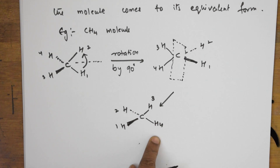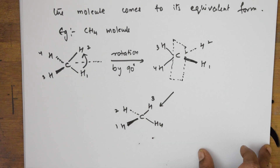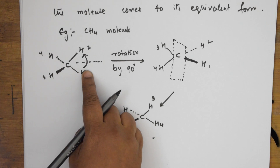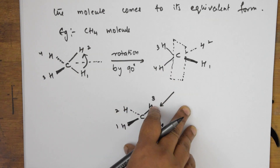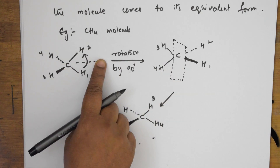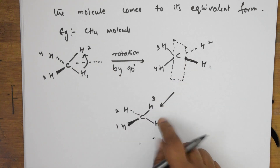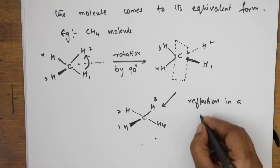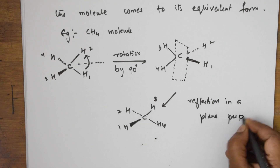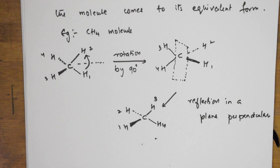This is what is called the alternate axis of symmetry. A molecule possessing an alternate axis of symmetry, when rotated by 90 degrees about the axis and then followed by a reflection in a plane perpendicular to it, gives back an indistinguishable configuration. This is called the alternate axis of symmetry.